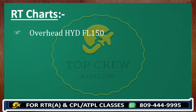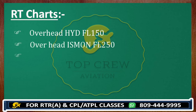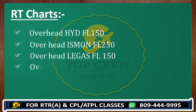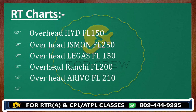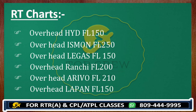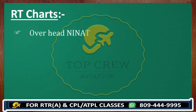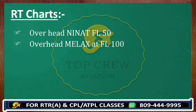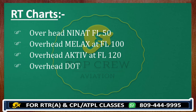Find out overhead Lagos at flight level 1-5-0. Overhead Ranchi at flight level 2-0-0. Overhead Arrivo at flight level 2-1-0. Overhead Lapan at flight level 1-5-0. Overhead Neenat at flight level 5-0. Overhead Melex at flight level 1-0-0. Overhead Active at flight level 1-2-0. Overhead Dotip at flight level 5-0. For each, find out the chart number and appropriate ATC.